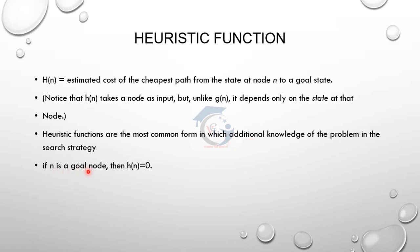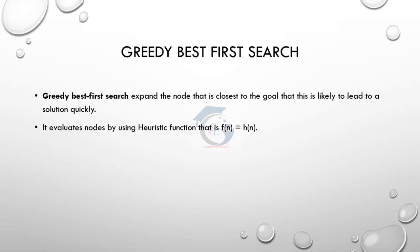If N is a goal node, then H(N) is equal to 0. So if the initial node is equal to the goal node, then H(N) value is 0. Now, for Greedy Best First Search — once best first search is clear — we find out the best first search by expanding the node closest to the goal.